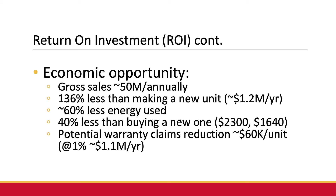60% less energy is used when remanufacturing, and the cost of buying a new one versus a remanufactured one is 40% less. If a cylinder head makes it onto full assembly, the potential warranty claim is about $60,000 per unit. With how many full assemblies are being sold now, even if 1% of those units were a warranty claim, that's about $1.1 million per year in potential loss.